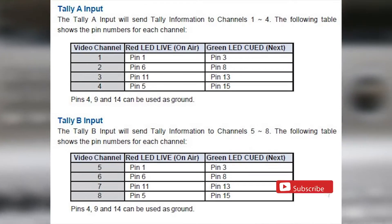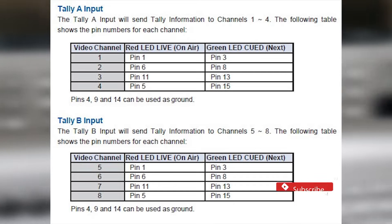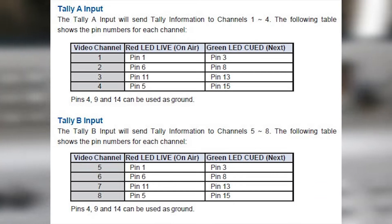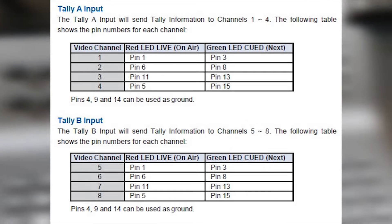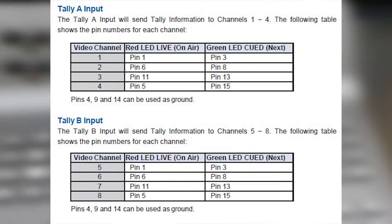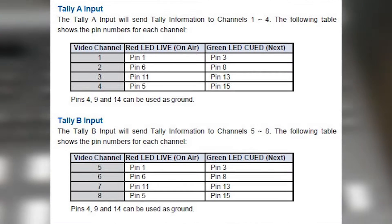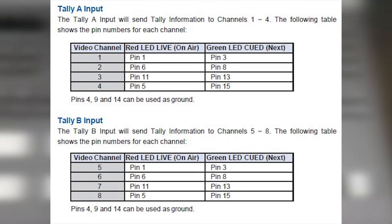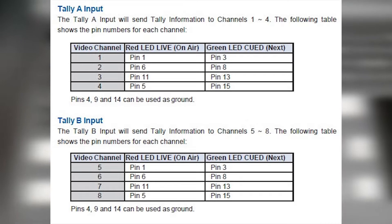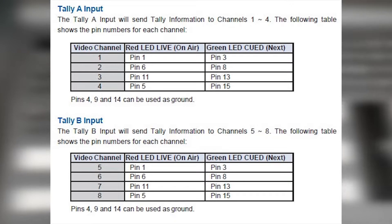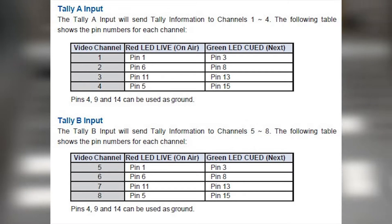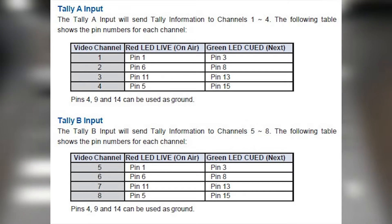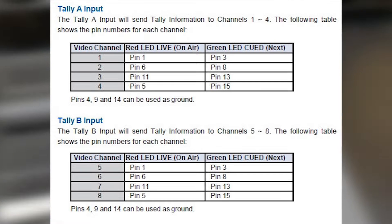Contact closure between the relevant pin number and ground will illuminate the Tally LED. For example, on Tally A, if pin 1 is connected to pin 4, the red LED will light up on channel 1.